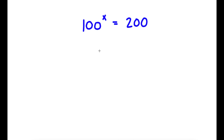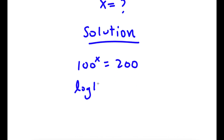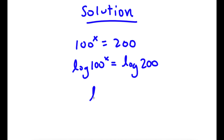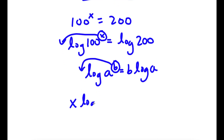So in this problem, I have 100 to the power of x is equal to 200, and I'm going to find the value of x. I start with 100 to the power of x is equal to 200, and take the log on both sides. Using the rule that log a to the power of b equals b times log a, I can move x to the front: x times log 100 is equal to log 200.